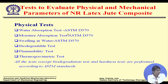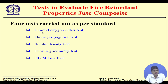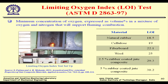Fire is an important property, so we evaluate fire retardancy through five tests: Limiting Oxygen Index (LOI), flame propagation test, smoke density test, thermogravimetric test, and UL-94-5 test. The atmosphere contains 21% oxygen; our rubber-coated jute sample requires 30.2% oxygen to burn — quite high — making it difficult for the sample to burn under atmospheric conditions. All tests were done at IIT Kharagpur.